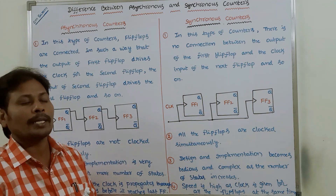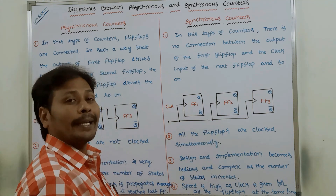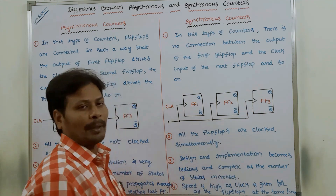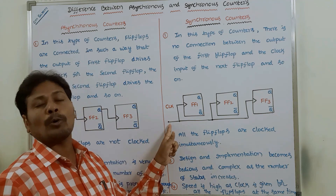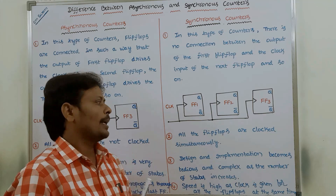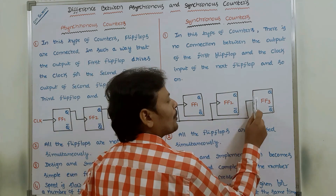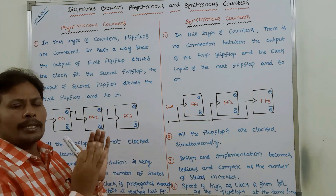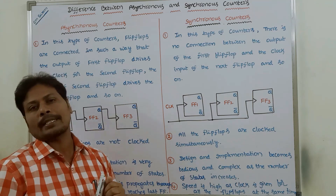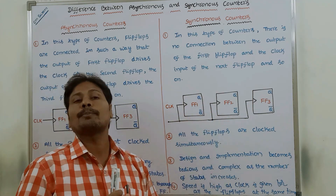Whereas in the case of synchronous counters, there is no connection between the output of one flip-flop and the clock input of the next flip-flop, because the same clock pulse is applied to all the flip-flops at the same time. The same clock pulse is given to the first, second, and third flip-flop simultaneously.